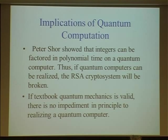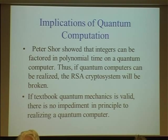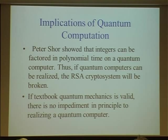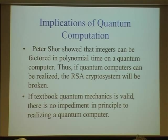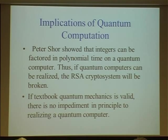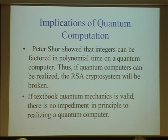A great boost for quantum computation occurred when Peter Shor gave an algorithm showing that an abstract quantum computer can factor large integers in polynomial time. This is important because if quantum computers could be realized and could perform factorization of very large integers, then the cryptosystems that we use — which are at the foundation of electronic commerce — would be broken. Not only would it make commerce impossible to continue, but all of the secrets of the past based on such cryptosystems would also be laid bare.